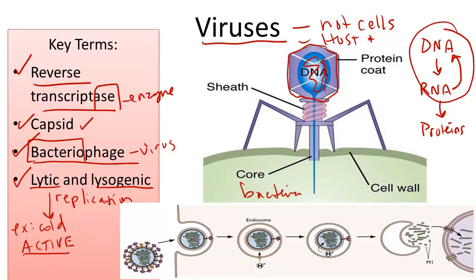The lytic cycle occurs when a virus enters a cell, produces its own DNA from the cell's machinery, and then lyses — or bursts out of the cell — leaving a dead cell behind, or leaves by exocytosis leaving a living cell behind. Then it moves on to infect other cells.